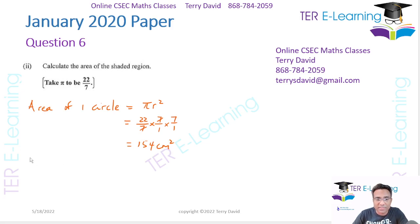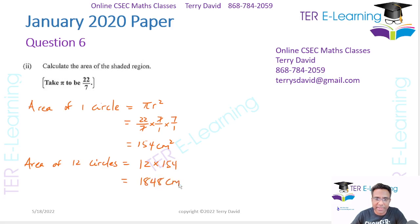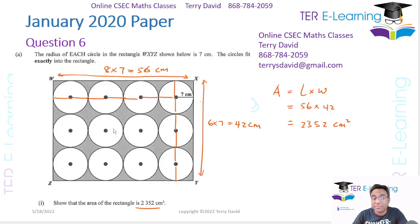That's the area of one circle, but we have 12 circles. So the area of 12 circles is going to be 12 multiplied by 154, which gives me 1848 cm squared. That's the area of all the white space in the diagram.